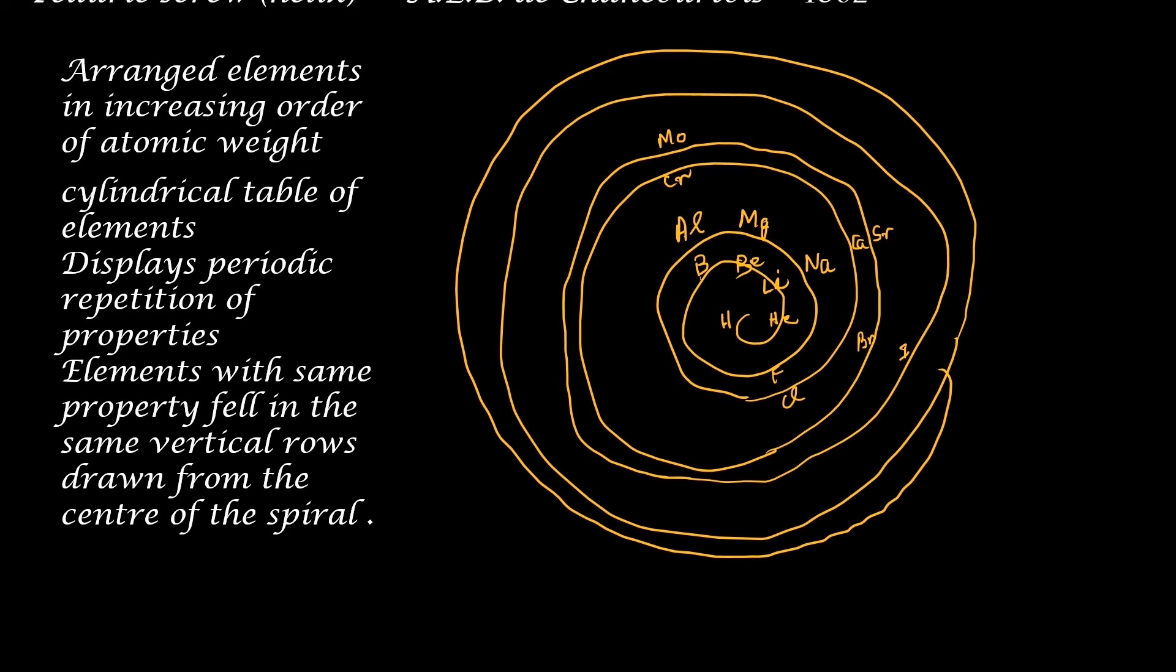In 1862, A.E.B. de Chancourtois proposed a new type of classification. He was a French geologist. He also arranged the elements in the increasing order of their atomic weights just as the previous scientists did. The classification by de Chancourtois was in the form of a cylinder where the elements are arranged spirally, hence the name telluric screw or telluric helix.